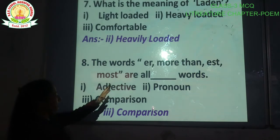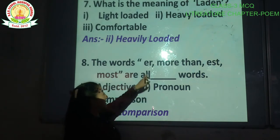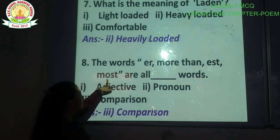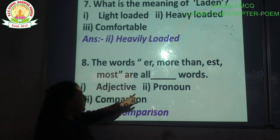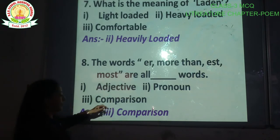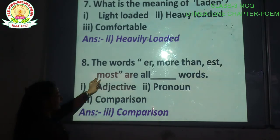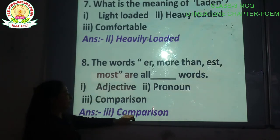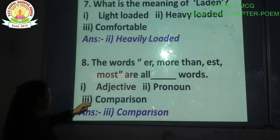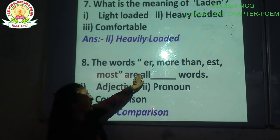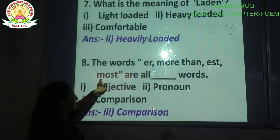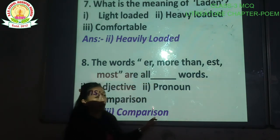Question number 8: The words 'er', 'more than', 'est', 'most' are all dash words. The correct answer is option number 3 — comparison words. The words 'er', 'more than', 'est', and 'most' are all comparison words.